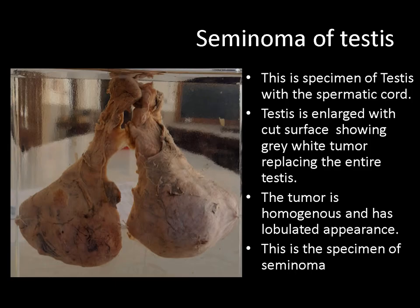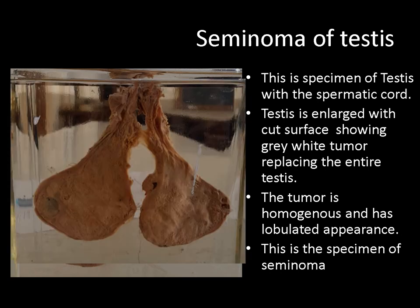This is the specimen of testis with the spermatic cord. The testis is enlarged and on the cut surface there is a grey-white tumor replacing the entire testis. The tumor is homogenous in appearance and lobulated. A homogenous and lobulated appearance of the tumor is in favor of seminoma of the testis. So this is a specimen of orchidectomy done for seminoma.